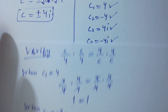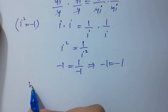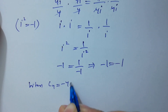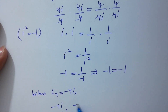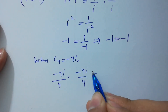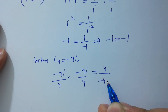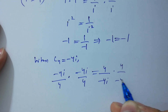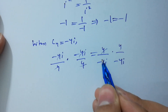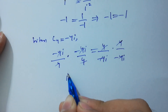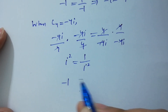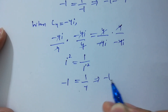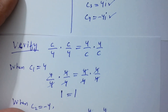When c4 equals minus 4i, we have (minus 4i/4) times (minus 4i/4) equals (4/minus 4i) times (4/minus 4i). The 4s cancel and minus times minus gives plus i squared on the left, and minus times minus gives plus i squared on the right. Since i squared equals minus 1, we get minus 1 equals minus 1, so c4 equals minus 4i is also correct.